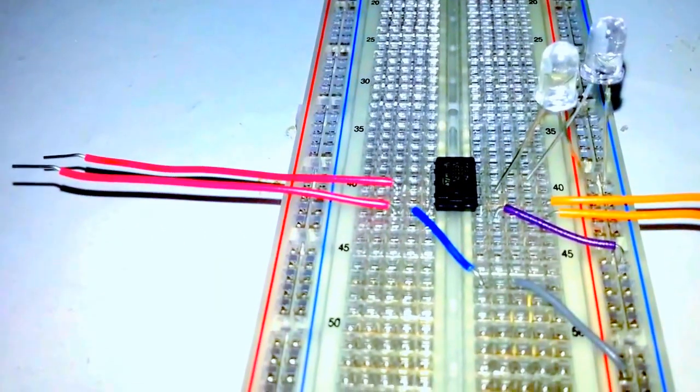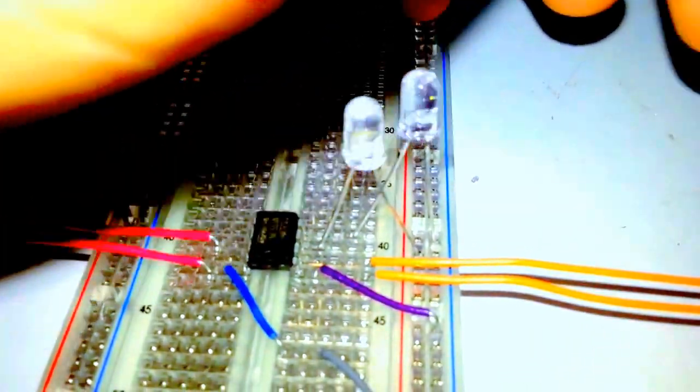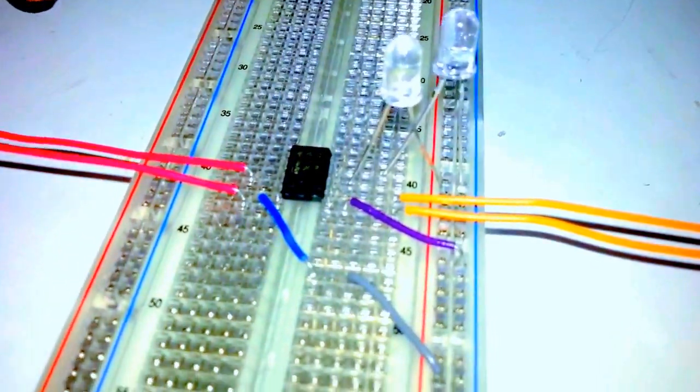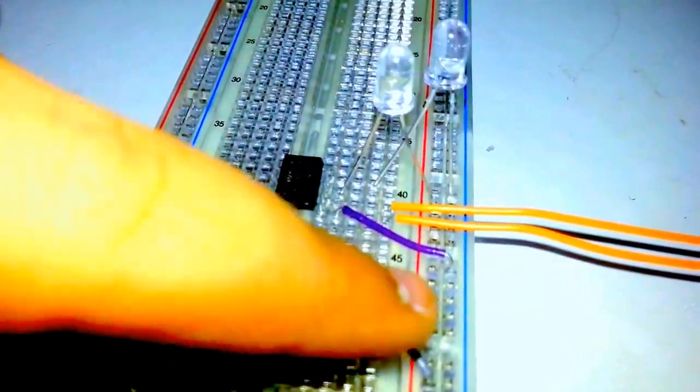Those two wires are the switching on wires, those two other wires are switching off wires. You don't need this LED, I just forgot to remove it. You only need one LED, which is this one, and two or three other couple of wires and a 9 volt battery.